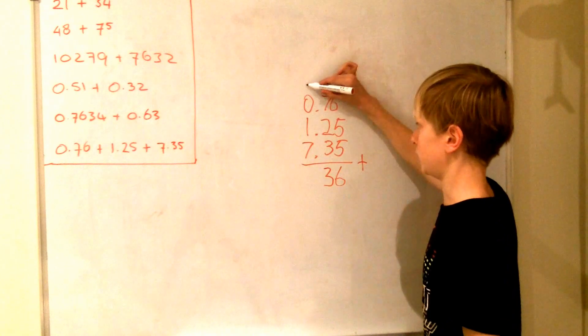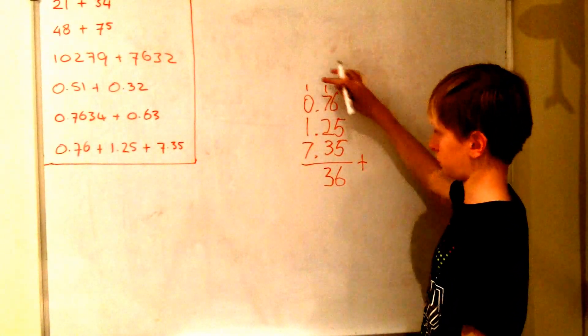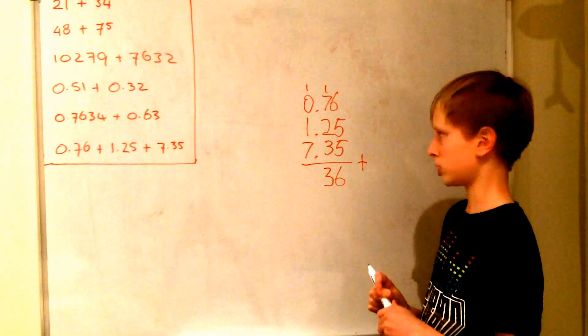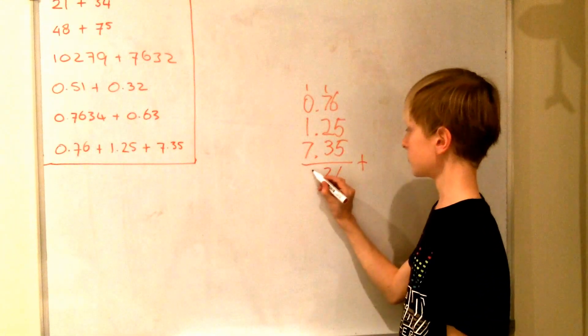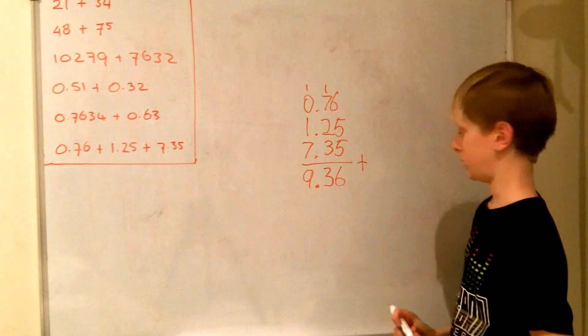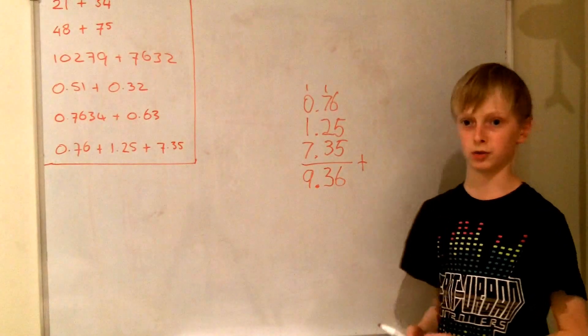So we write the 3 here and the 1 here. So 1 to 0 is 1. 1 plus 1 is 2. Plus 7 is 9. So again the decimal point at the same level. And this is the answer to the questions.